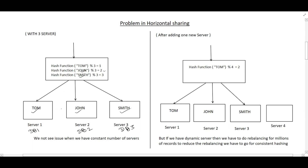There is no problem with this solution if the number of servers is fixed. But in a real-time environment, there could be a traffic requirement where we need to add a server — like server 4 — to handle huge traffic. When we do that, the mod value changes from 3 to 4. And even if a server goes down — say server 3 goes down — the mod value changes again. So whenever we change the number of servers, this mod value changes, and that is actually the problem.